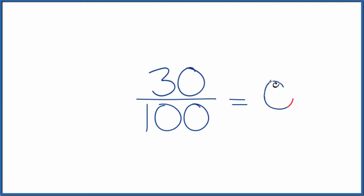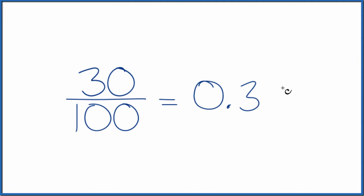First, you could put 30 divided by 100 in your calculator. You'd end up with 0.30, and you don't really need to write the zero here.